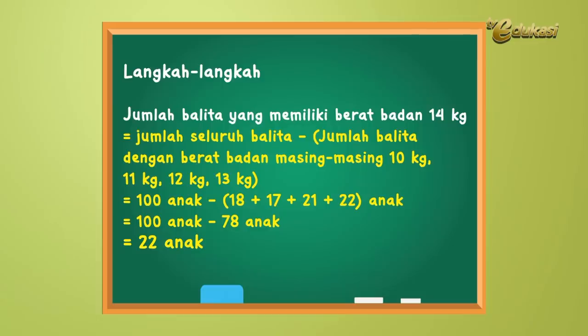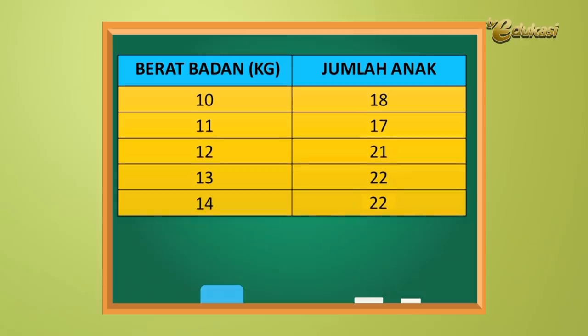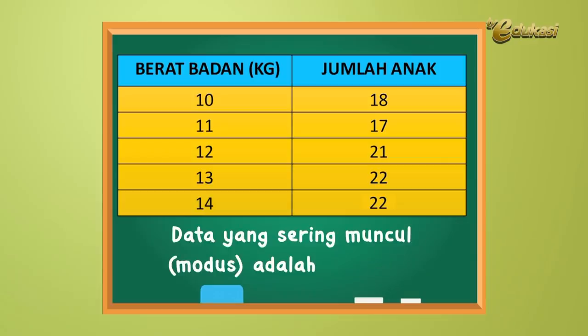Anak-anak, karena ada jumlah anak yang bernilai sama, yaitu yang 13 kg sebanyak 22 anak dan 14 kg sebanyak 22 anak, jadi modus dari soal ini adalah 13 kg dan 14 kg. Jelas ya, anak-anak? Jadi modusnya ada 2: 13 kg dan 14 kg. Mudah ya?